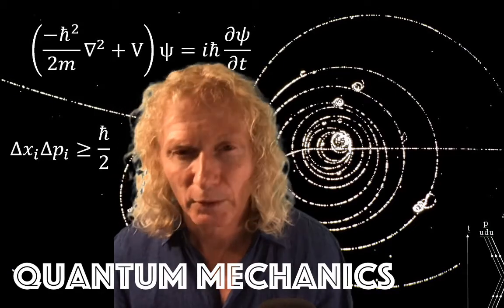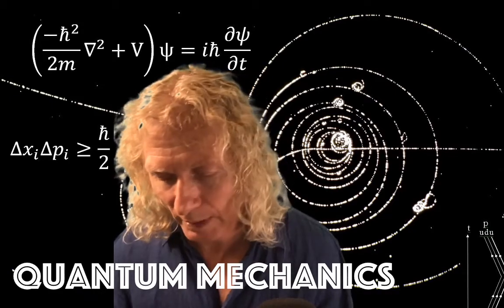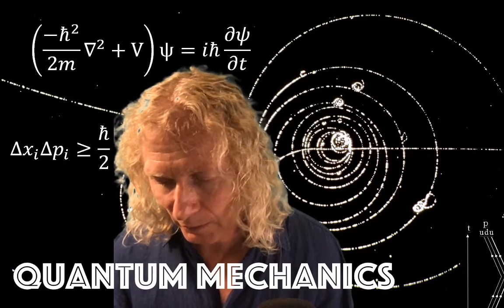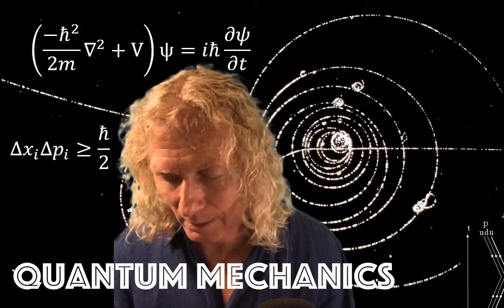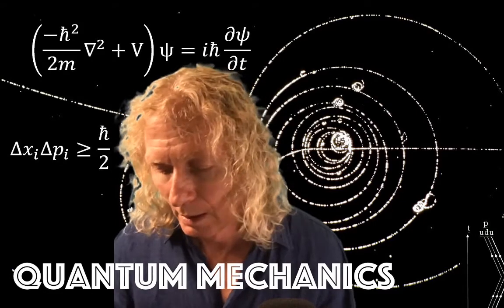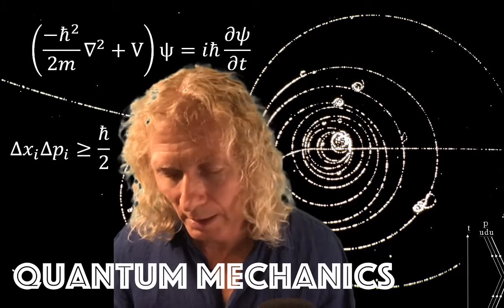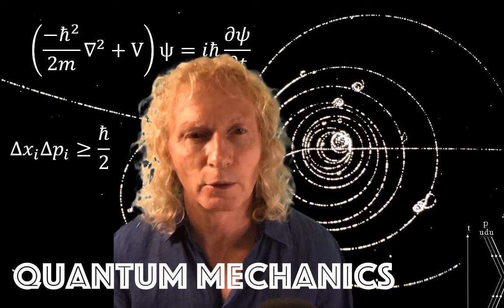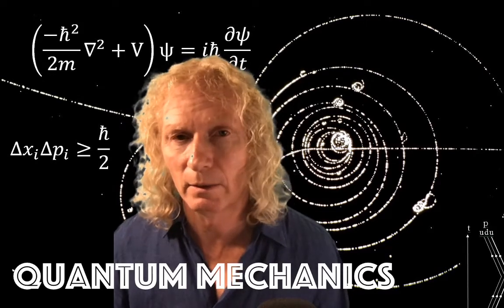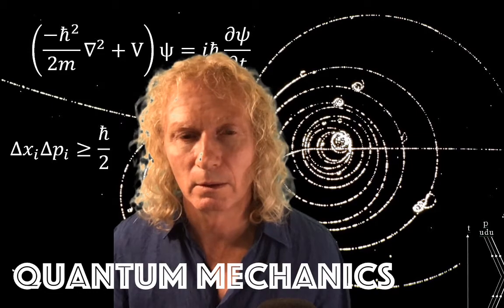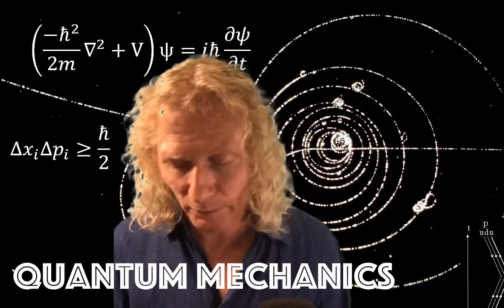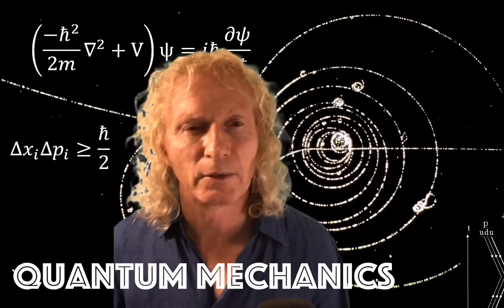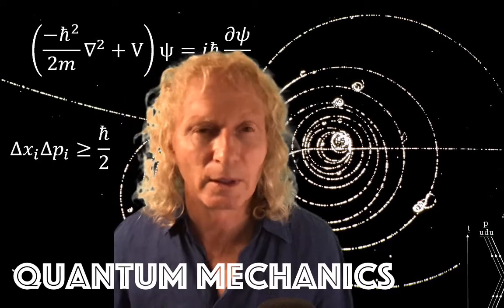So look at this. We have psi under the integral sign, we have psi bar on the left, we have minus ih bar d psi dx on the right. Okay, that's like the same, that's like in the Dirac notation having a bra psi on the left, an operator for p in the middle, and a ket psi on the right. And this is the integral form of that.